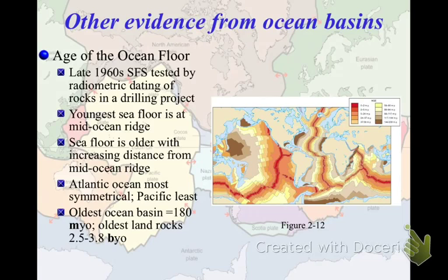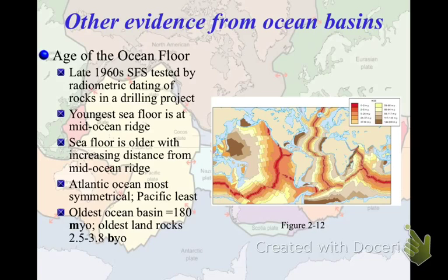There was other evidence supporting seafloor spreading as well. The age of the ocean floor itself — we had really started to get radiometric dating of seafloor rocks in the 1960s. What we found was that the youngest seafloor is found at the mid-ocean ridge and the oldest is found at the trenches; the farther away you are from the mid-ocean ridge, the older the rocks tend to be. The Atlantic Ocean, which you may remember from our ideas about Pangea, is the newest ocean basin, and it is the most symmetrical, with the mid-ocean ridge running almost perfectly north-south through it.